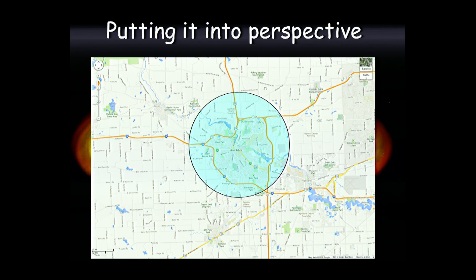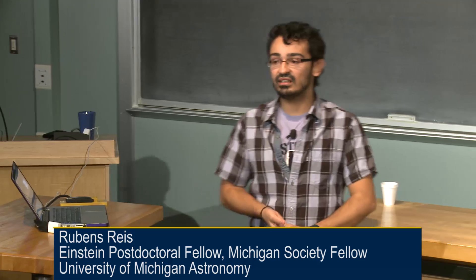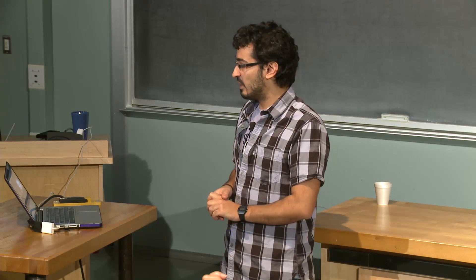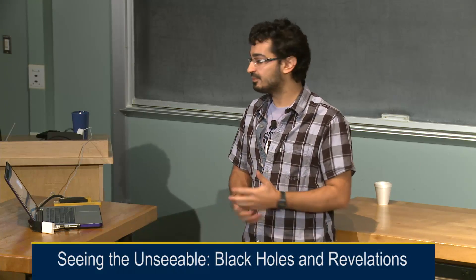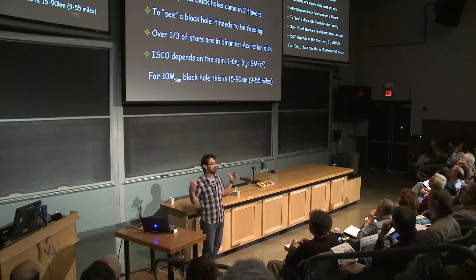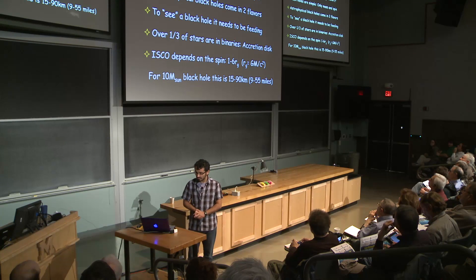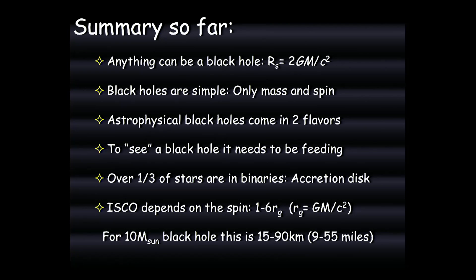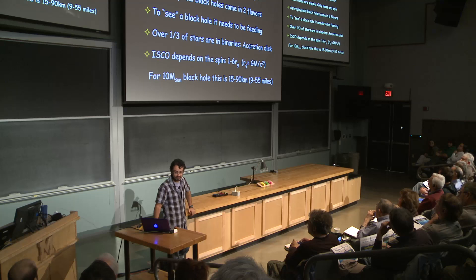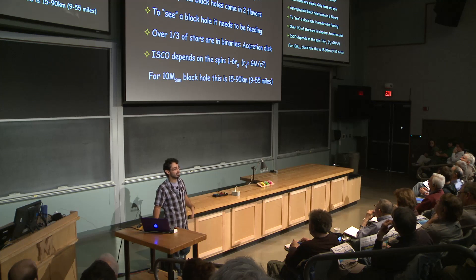I've presented a lot of ideas: binary systems, the mathematical definition of the event horizon, the no hair theorem — how mass and spin pretty much define a black hole. I also said that if you have a black hole by itself in space, you cannot see it; for you to be able to see it, the black hole needs to be accreting material — it needs to be feeding, it needs to have a disk around it. Luckily, there are quite a number of those. So now, for the next 20 minutes, I'll talk about how we go about doing this — how we actually measure the accretion disk, how we measure the spin, how we see the disk.